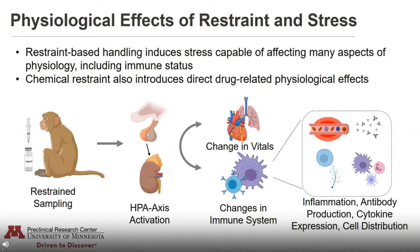Restraint has been shown to induce stress capable of affecting numerous aspects of physiology, including the immune system, in addition to having direct drug-related effects introduced by chemical-based restraint. When an animal experiences restraint-based sampling, it may have a stress response and activation of the HPA axis, leading to changes in vital measurements and in the immune system — including changes in inflammatory state, antibody production, cytokine expression, and immune cell distribution throughout the body. In such cases it may become difficult or even impossible to discern what aspects of physiological status are attributable to a test article or disease state versus an unintentionally induced stress response.